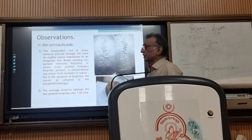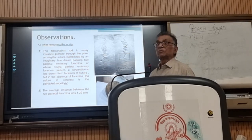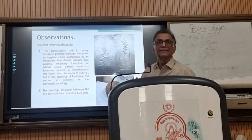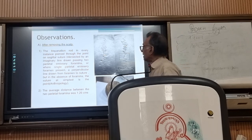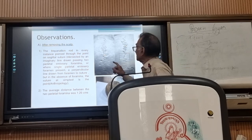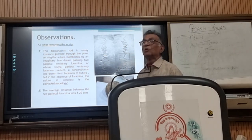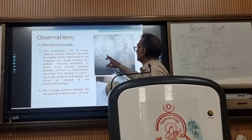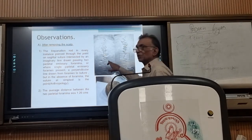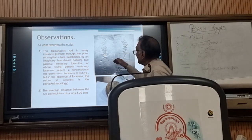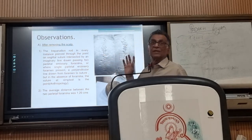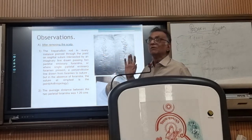In anatomy, this point is not laid down — neither in Gray's Anatomy nor in any book of anatomy. But in anthropology, they have mentioned this point, and it is known as the obelion. They say that there are two parietal emissary foramina; if you draw an imaginary line crossing through these two parietal emissary foramina, the intersecting point is the obelion point. This is the definition from anthropology books.